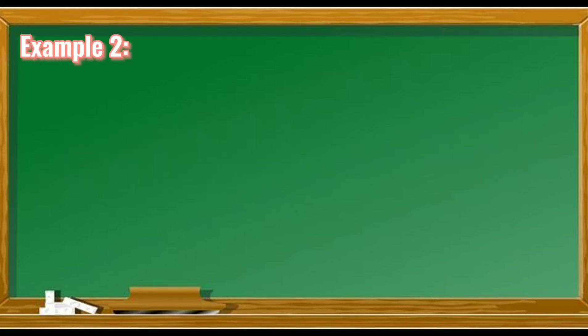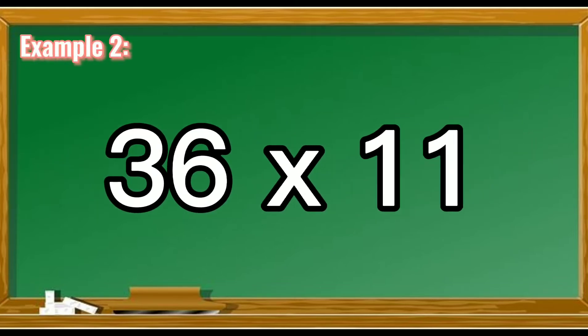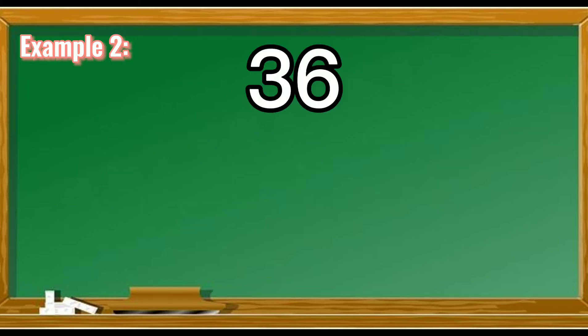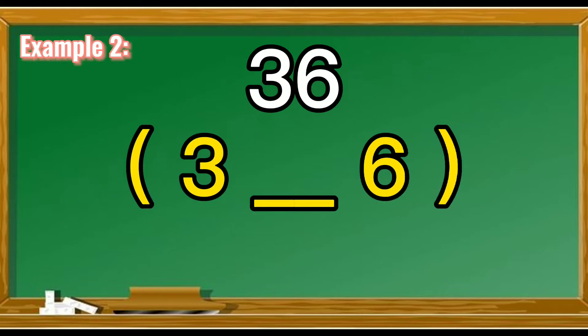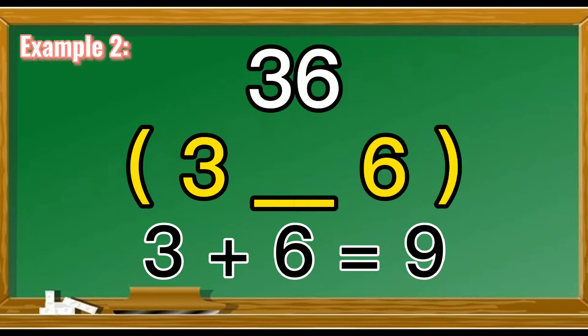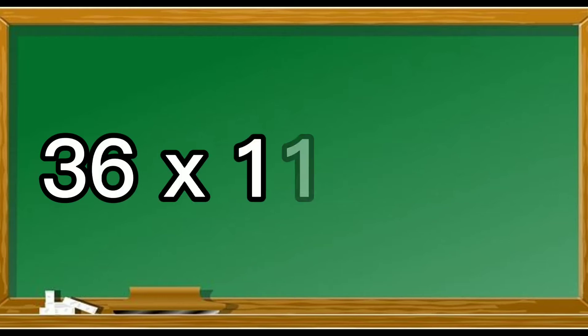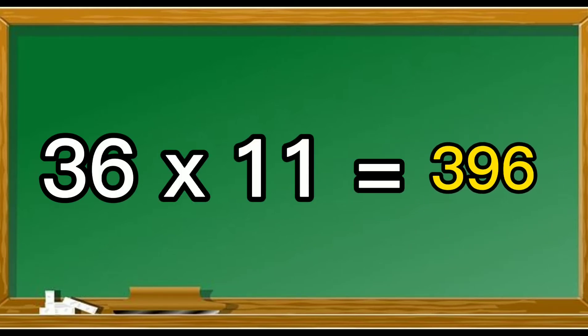Let's try another example: 36 times 11. Again, separate the first and last digits of the given number. Add the digits together and put the sum between the original two digits. So 36 times 11 is 396.